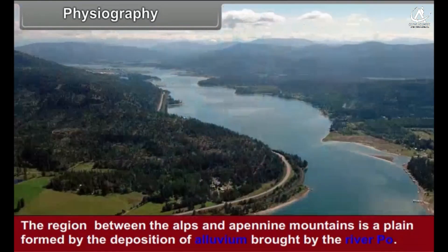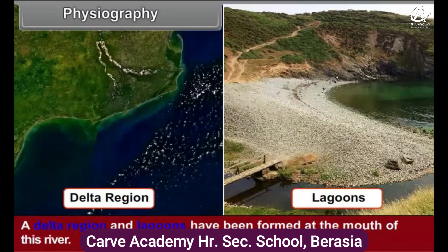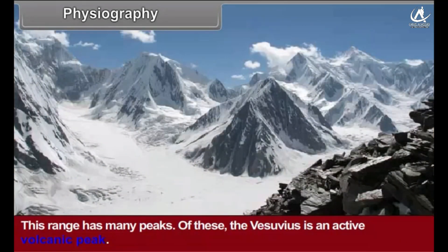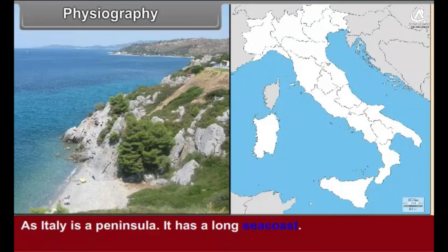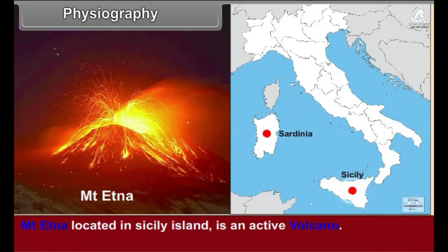The region between the Alps and Apennine mountains is a plain formed by the deposition of alluvium brought by the River Po. A delta region and lagoons have been formed at the mouth of this river. In the central part of the peninsula is the Apennine mountain range, extending in a northwest-southeast direction. This range has many peaks, of which Vesuvius is an active volcanic peak. As Italy is a peninsula, it has a long sea coast. About 70 islands are included in Italy, of which Sardinia and Sicily are the larger ones. Mount Etna, located on Sicily island, is an active volcano.